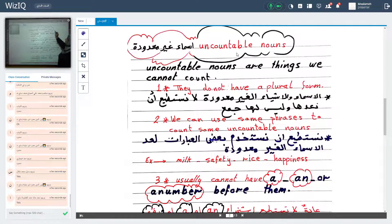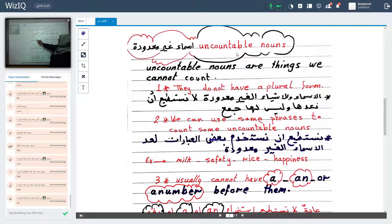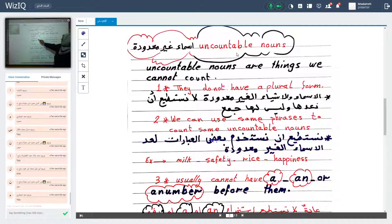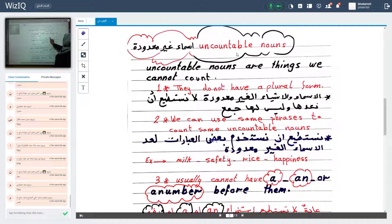Uncountable nouns. أسماء غير معدودة. Uncountable nouns are things we cannot count. لا أستطيع أن أعدها. They don't have a plural form. الأسماء والأشياء الغير معدودة لا نستطيع أن نعدها ولا يصلح جمعها.